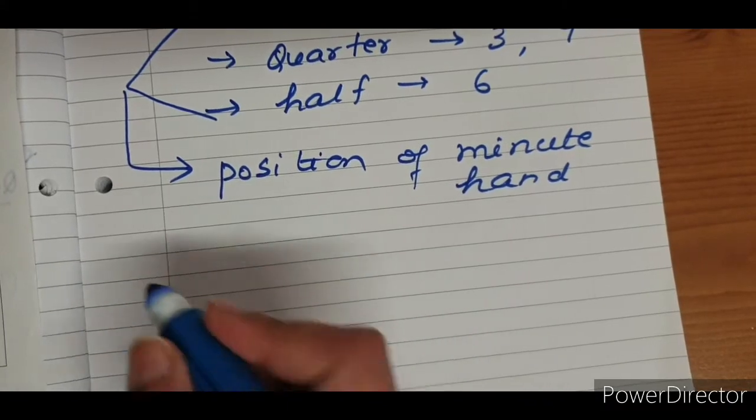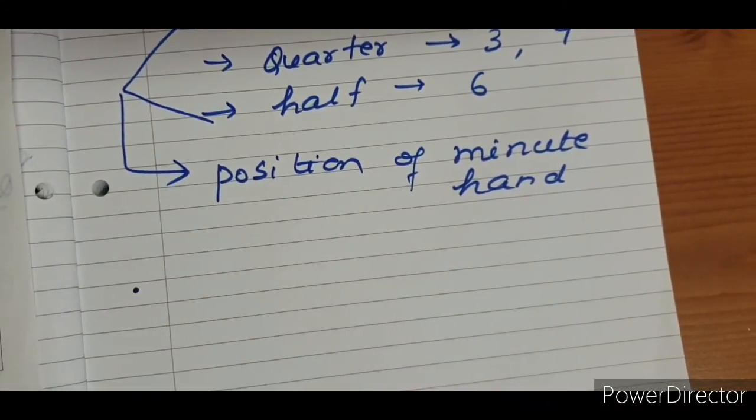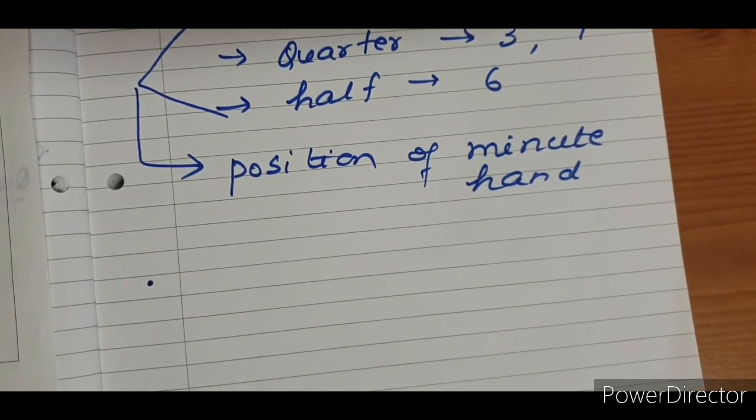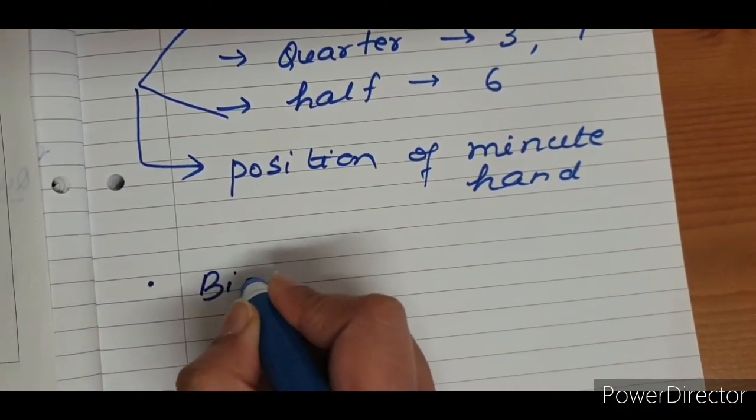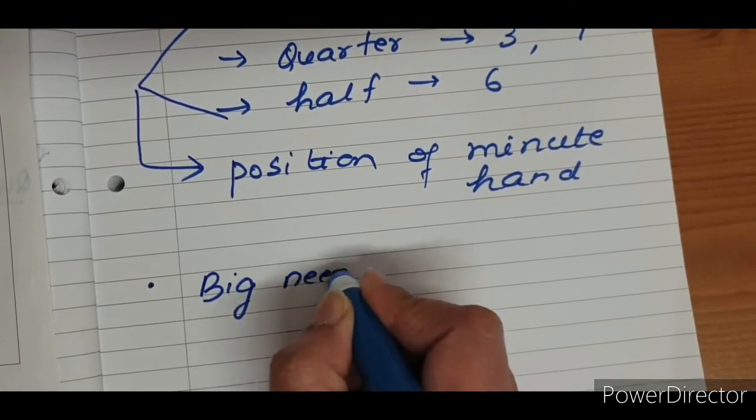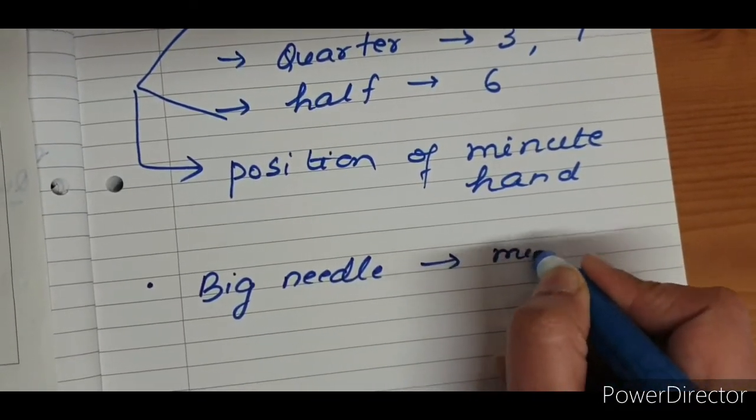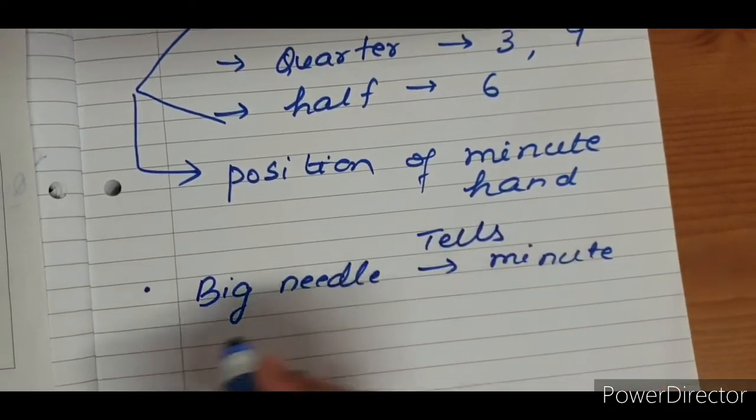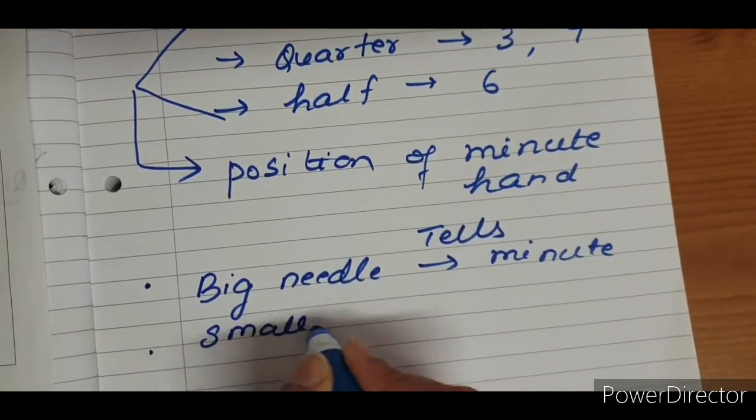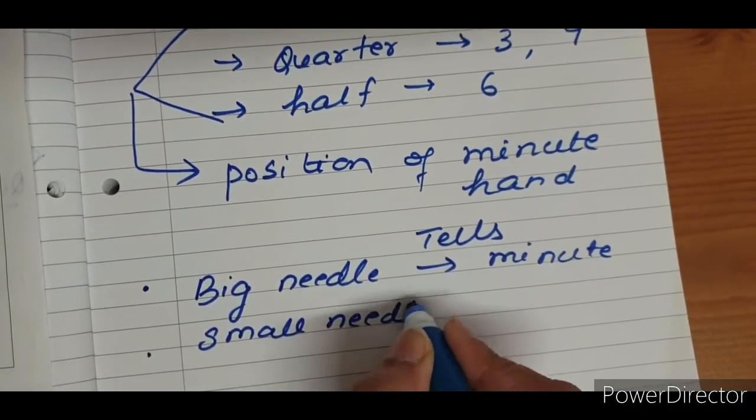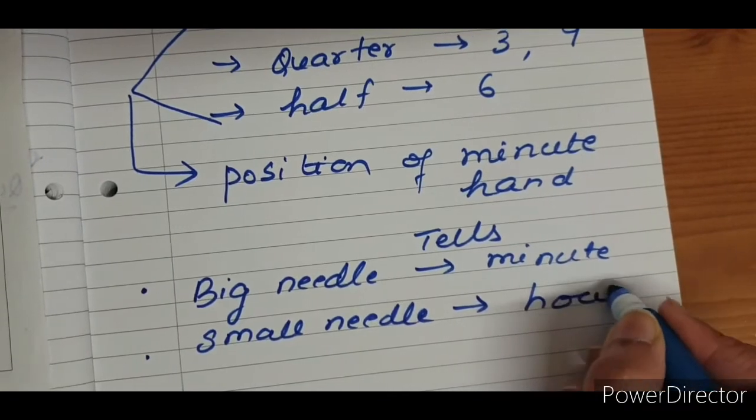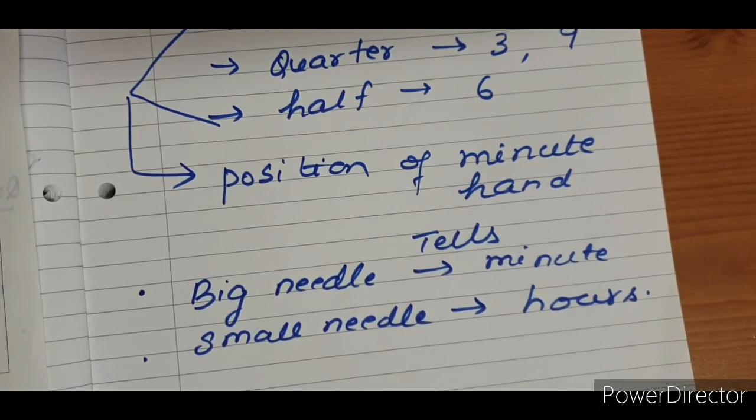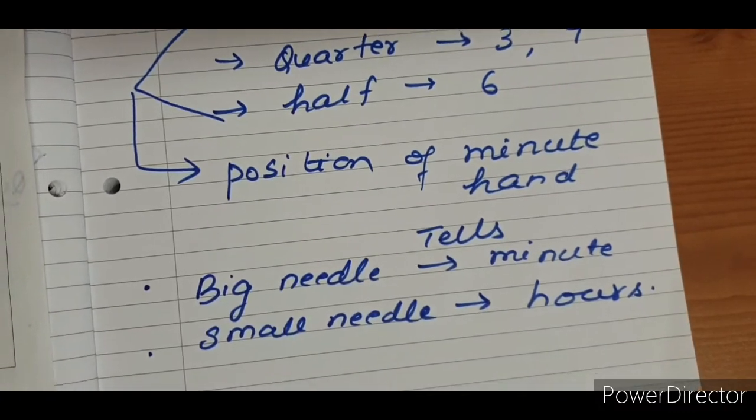Now, let's look at the needles. In analog clock, we have two needles. Big needle and small needle. My big needle is used to read minutes. So, big needle tells minutes. Small needle tells you hours.